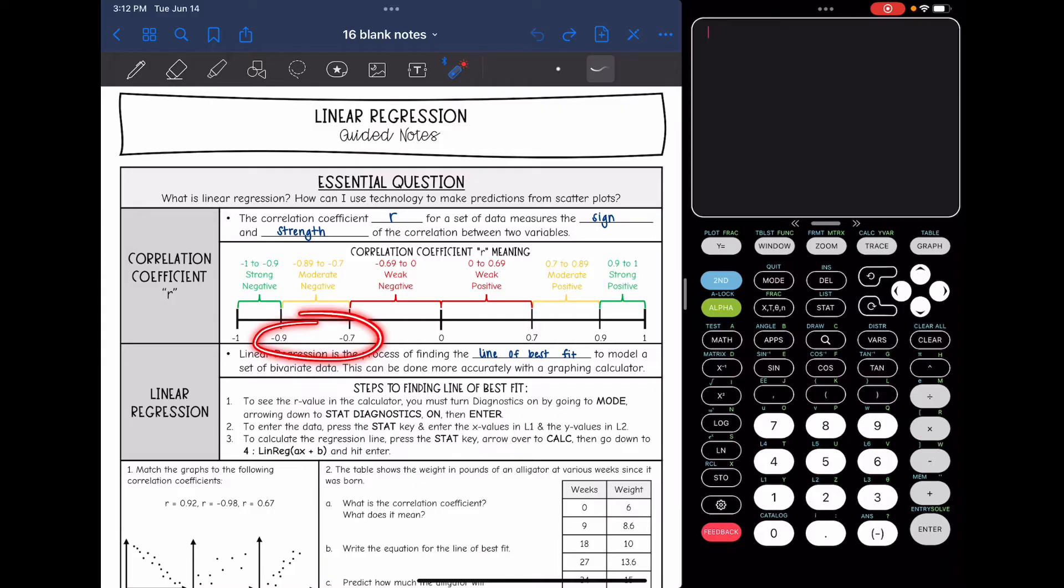If you're in between negative 0.9 and negative 0.7 or 0.7 and 0.9, then that is moderate. Anything below 0.7 we would consider weak. When your calculator tells you that R value, it's for the correlation coefficient, and it's just measuring the sign and the strength of the correlation.